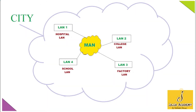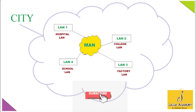The next type of computer network is MAN. MAN stands for Metropolitan Area Network. MAN covers an area of a city, which is larger than the area covered by LAN but smaller than the area covered by WAN, which we will discuss shortly.